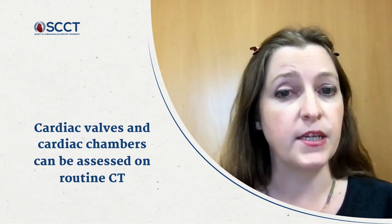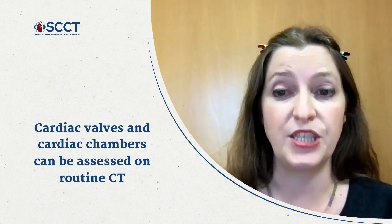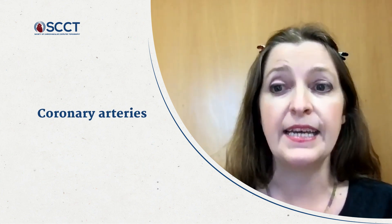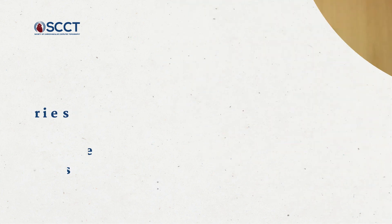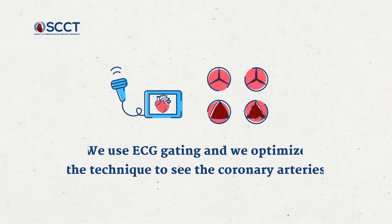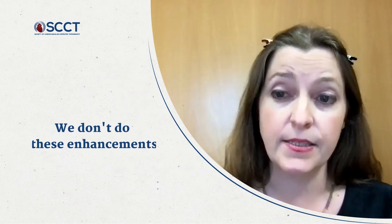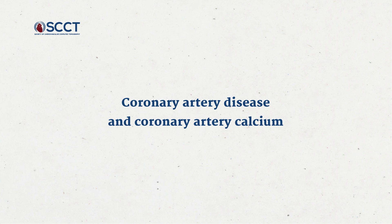Other cardiac valves and cardiac chambers can also sometimes be assessed on routine chest CT, but there isn't time to go into that today. One of the most important things we can comment on in the heart on routine chest CT is the coronary arteries. When we do coronary CTA we use ECG gating and optimize the technique to see the coronary arteries. Coronary artery calcium is one part of the coronary atherosclerotic plaque and can be easily identified on chest CT without ECG gating.